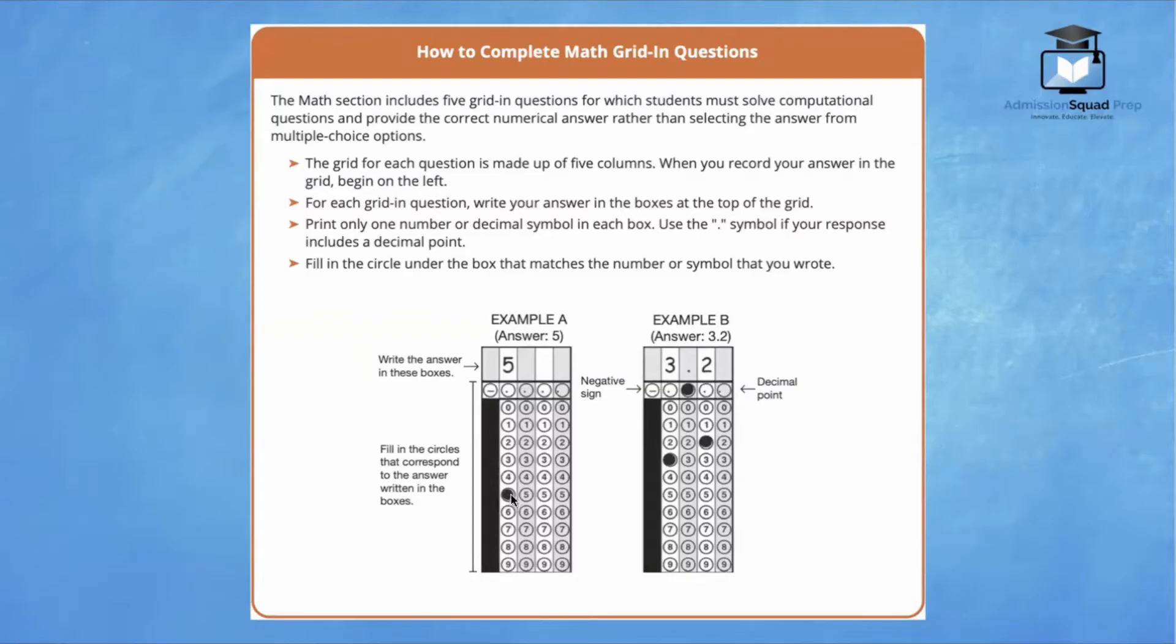Print only one number or decimal symbol in each box. Use the decimal symbol if your response includes a decimal point. Fill in the circle under the box that matches the number or symbol that you wrote. Keep in mind, there are no fractions on the grid-in section of the exam.